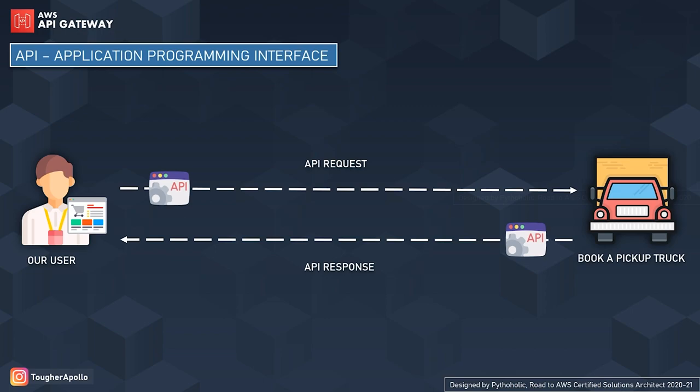The simple visual here tells us how the API request flows and how the response comes back to the user. It's all about the request that has been sent and the response that has been received.